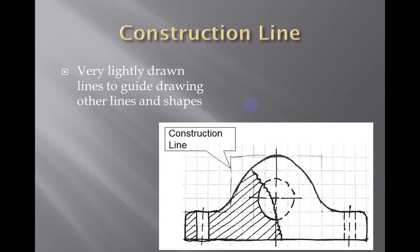First off is the construction line. Construction lines are lightly drawn in your engineering notebook and just used as guides. They're not actually part of the object but they're needed in order to get the correct proportion and dimensions in your drawings. Use these lines to guide drawing other lines and shapes.